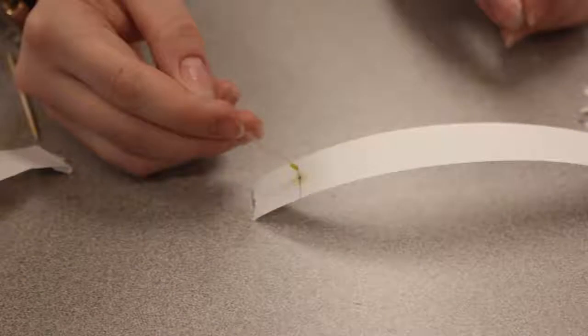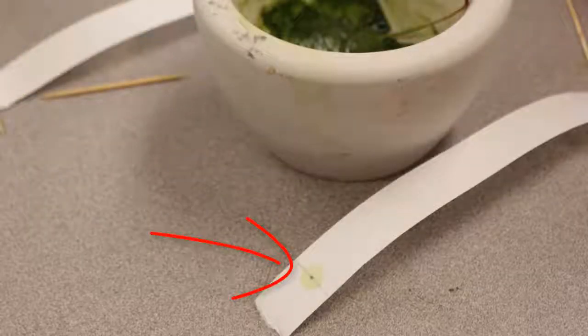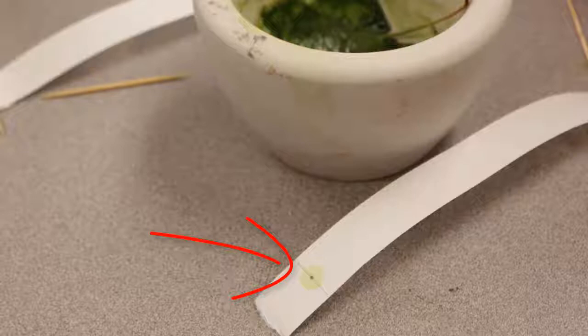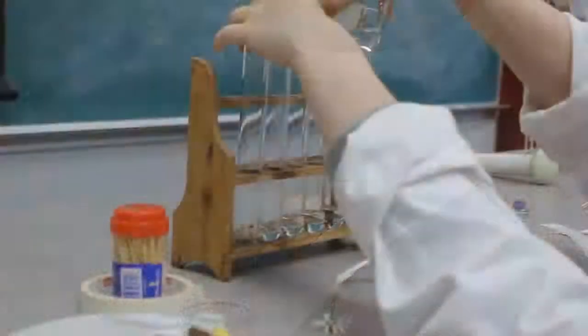Using a capillary tube, dab a dot of your mixture onto the pencil dot that we marked on the paper earlier. Letting it dry between each application, continue dotting on the same spot until you have a highly concentrated spot of pigment on your paper. Here you can see a lightly pigmented spot on the paper. Try and dab it a few more times so that it's darker and more concentrated.